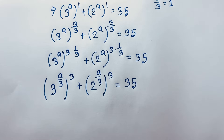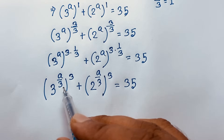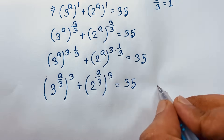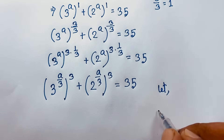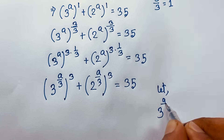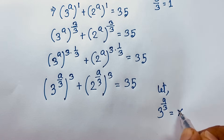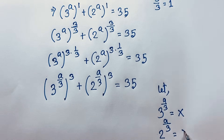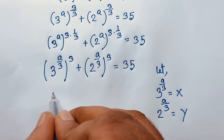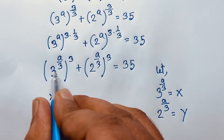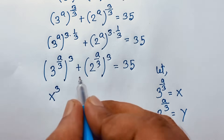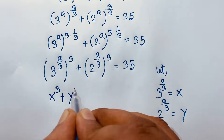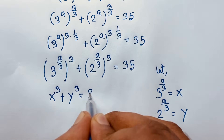Now we let x equal 3 to the power (a over 3), and y equal 2 to the power (a over 3), where x and y are natural numbers. The equation becomes x cubed plus y cubed equals 35.